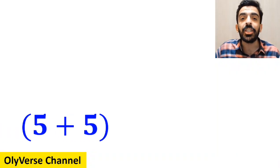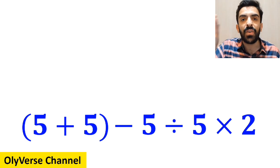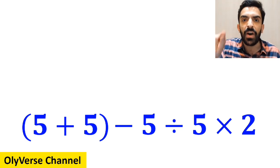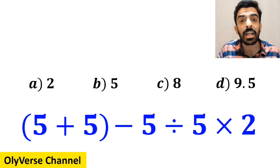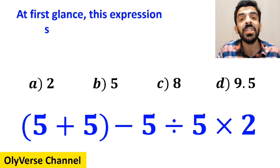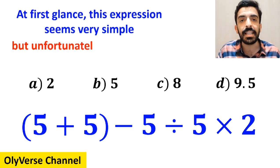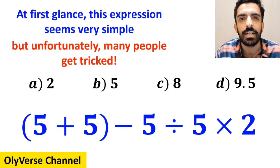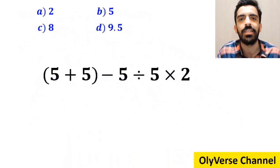What is the value of the expression (5 + 5) minus 5 divided by 5 times 2? Which option do you think is the correct answer to this question? At first glance, this expression seems very simple, but unfortunately many people get tricked. Let's take a closer look and solve it together.